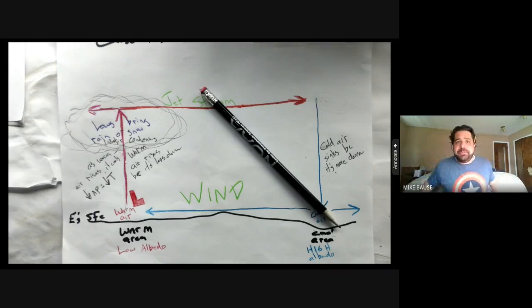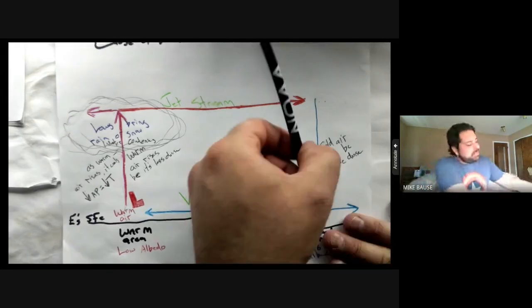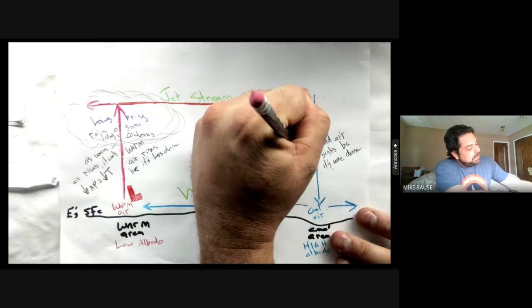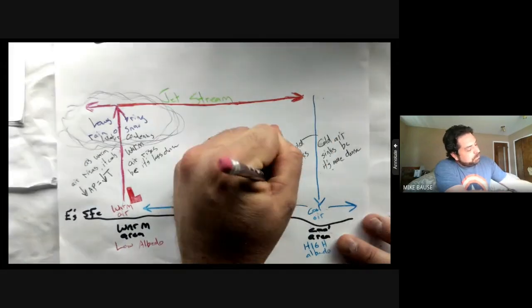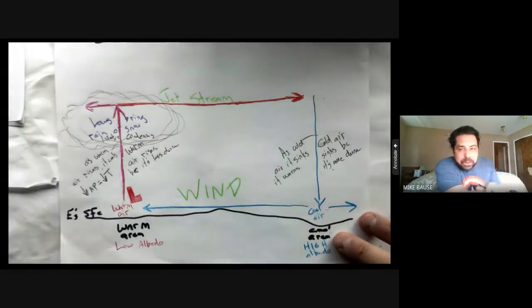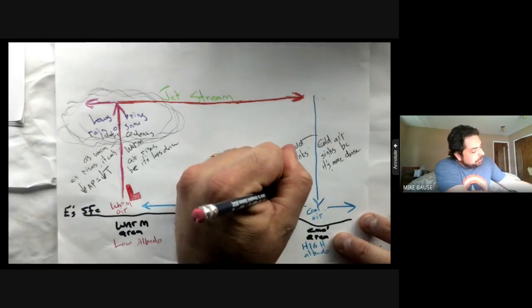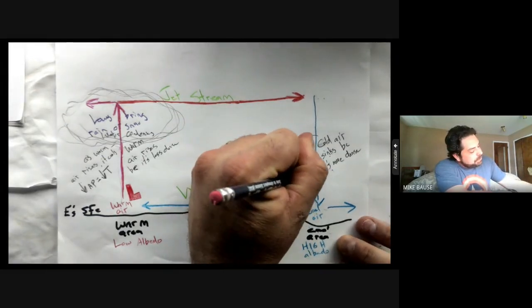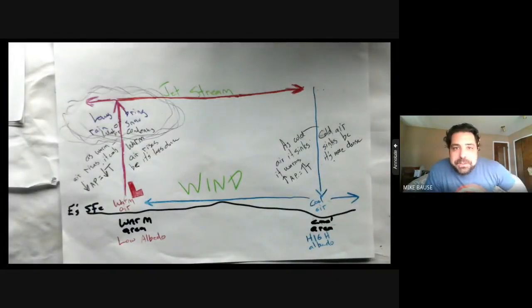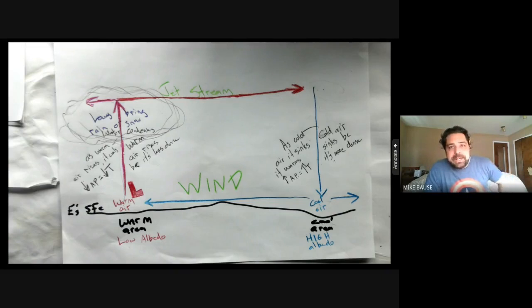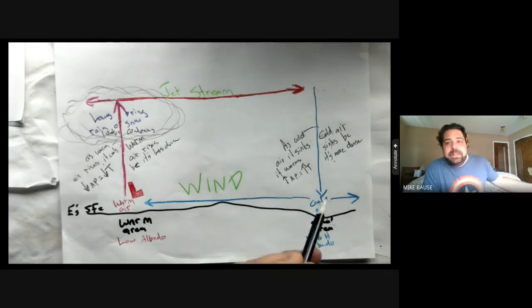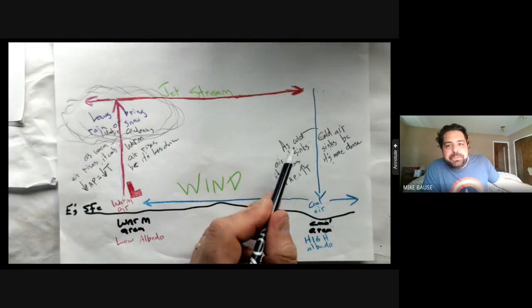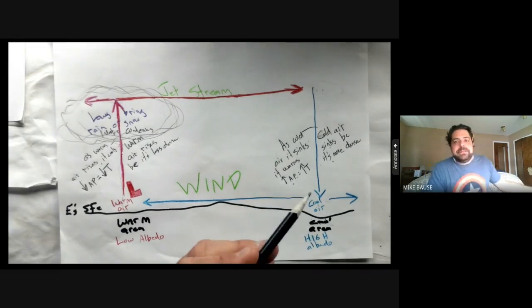As cold air sinks, it warms. Why? Because we're increasing air pressure, which causes an increase in temperature. There's two temperature changes going on on this side of the diagram and they both seem to conflict. You have air losing energy causing it to be colder, but here it's not losing or gaining energy - what's changing is the air pressure. It's a confusing thing.